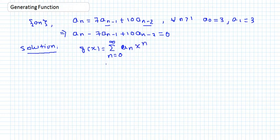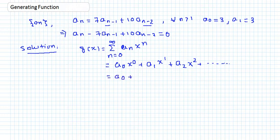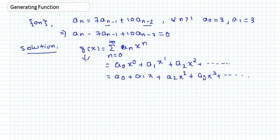Writing this more explicitly: if we put n=0 we get a₀x⁰, then n=1 gives a₁x, then a₂x², and so on. So G(x) = a₀ + a₁x + a₂x² + a₃x³ + ... This infinite series is our generating function G(x).